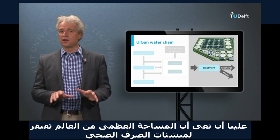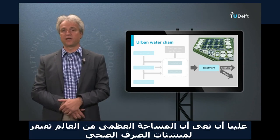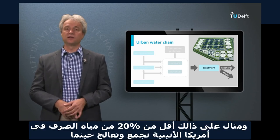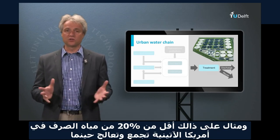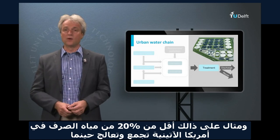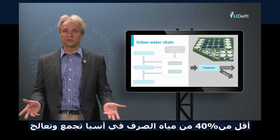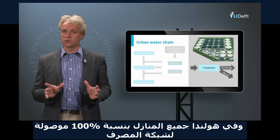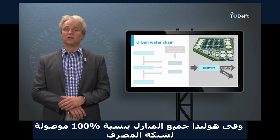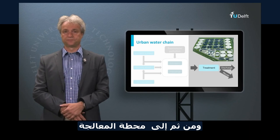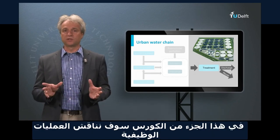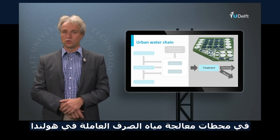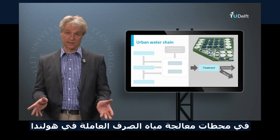We also have to realize that large areas in the world are yet deprived from adequate sewage collection and proper treatment. For instance, in Latin America less than 20% of the sewage is collected and treated, whereas in Asia this is less than 40%. Here in the Netherlands, about 100% of all households are connected to the sewage network and finally to a sewage treatment plant. In this part of our introductory course, we will specifically discuss the setup and functionality of the sewage treatment plants currently in operation in the Netherlands.